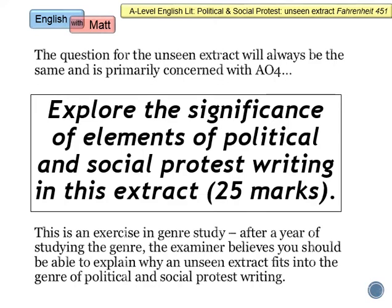The question for this unseen extract is always the same, and it is primarily concerned with AO4. What that means is that this is really an exercise in genre study. By the time you've sat the exam, you will have spent at least a year studying political and social protest writing. The examiner expects you to be able to highlight why any given extract fits into that genre. So this is really testing your ability to look at the genre and link themes of political and social protest writing to an unseen extract. The question is always: explore the significance of elements of political and social protest writing in this extract. It's 25 marks.